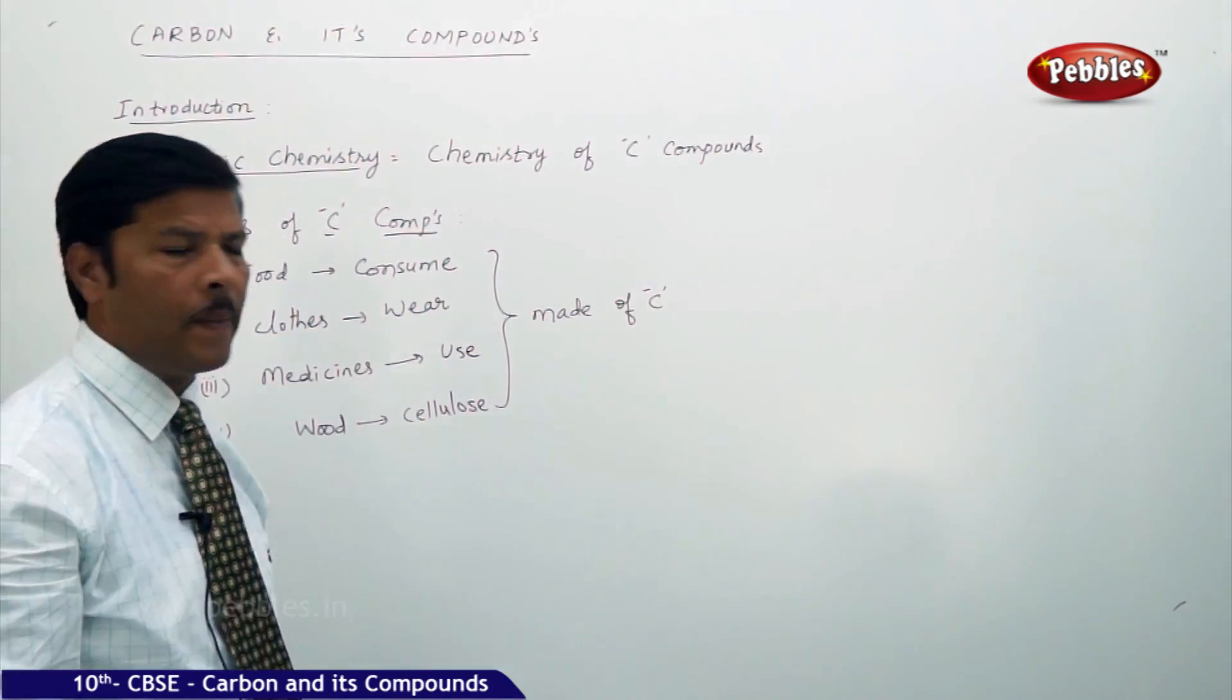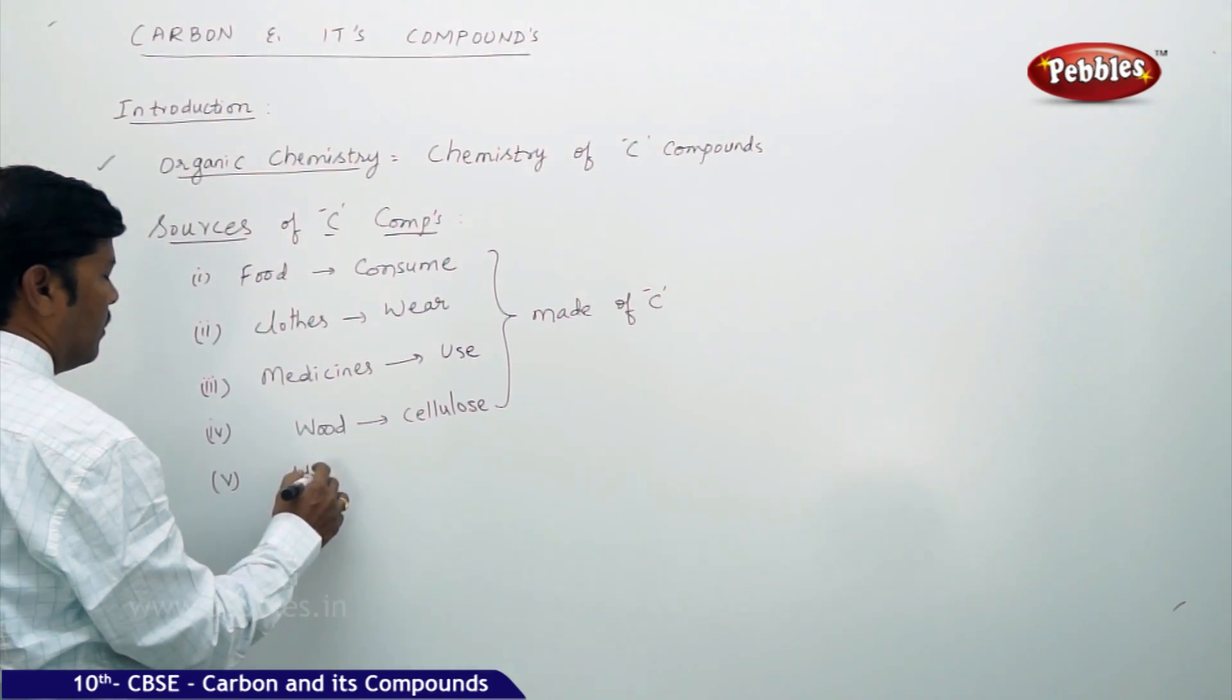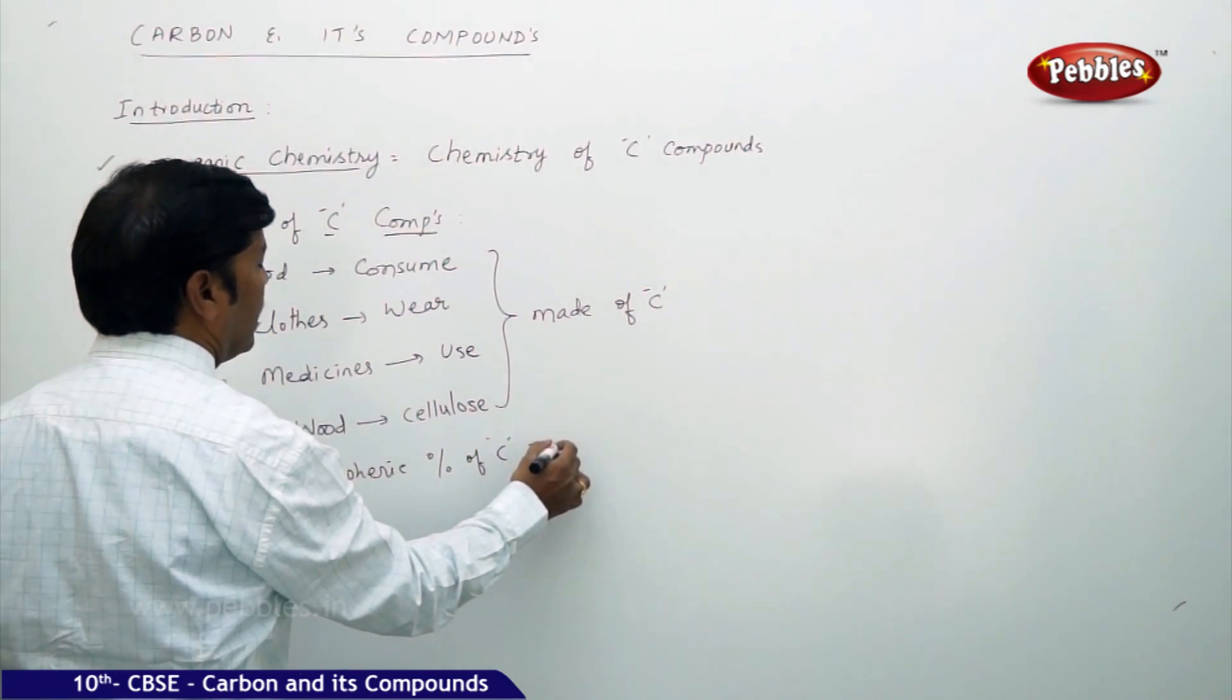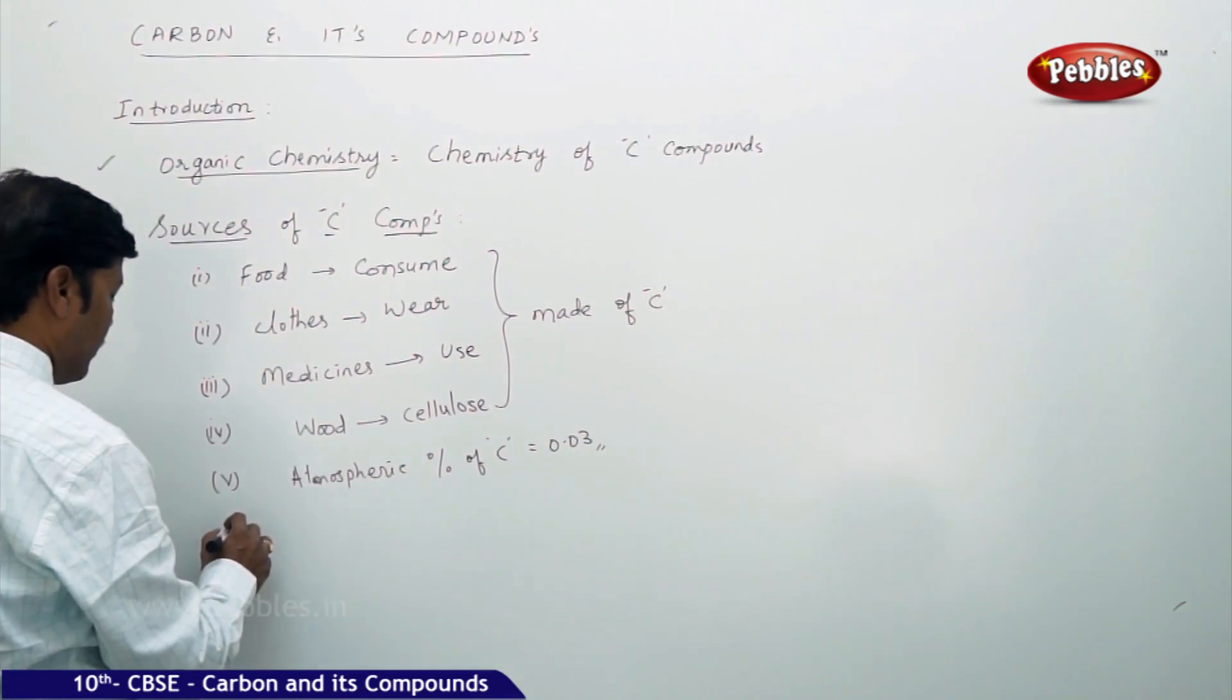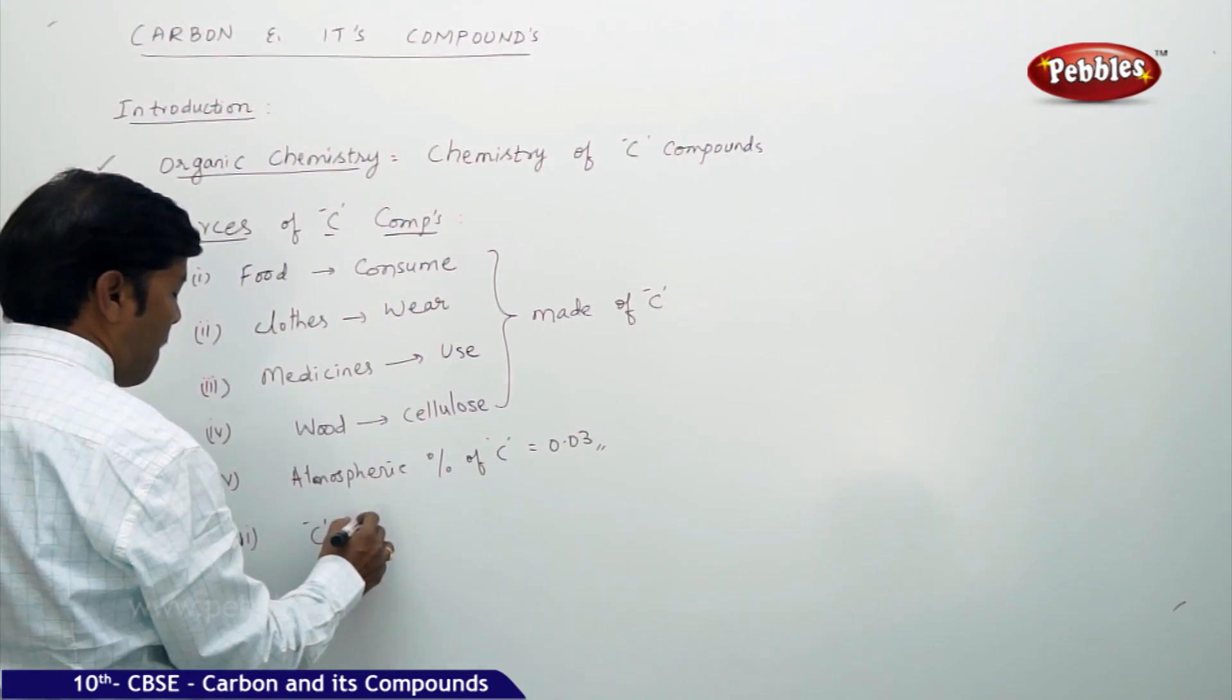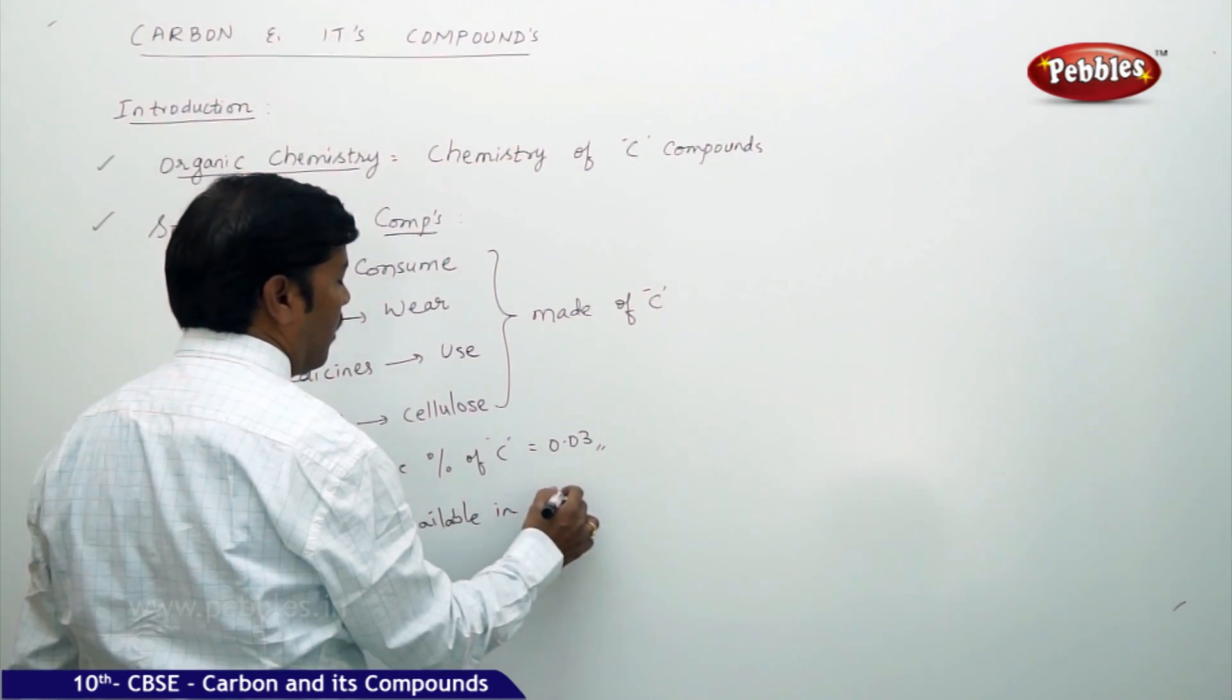The atmosphere—the atmospheric percentage of carbon is approximately 0.03%. So carbon is everywhere. Carbon is available indirectly; it's also available in oxides.